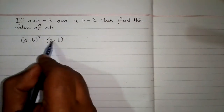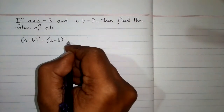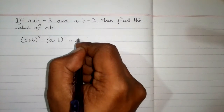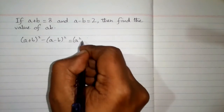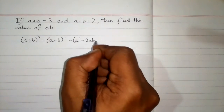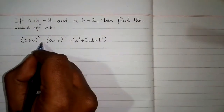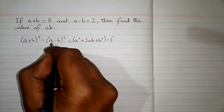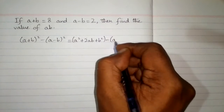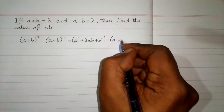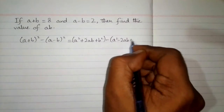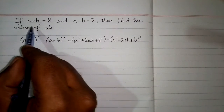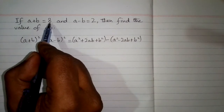a plus b whole square is equal to a squared plus 2ab plus b squared. Then we write the minus sign, and a minus b whole square is equal to a squared minus 2ab plus b squared. Now we put the value of a plus b, which is 8.